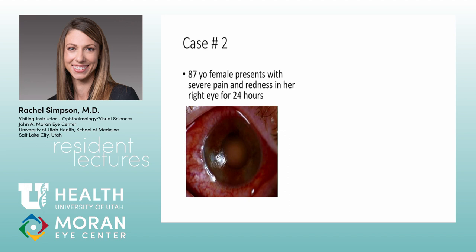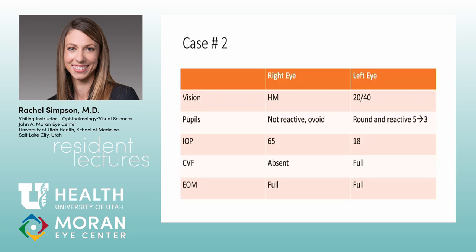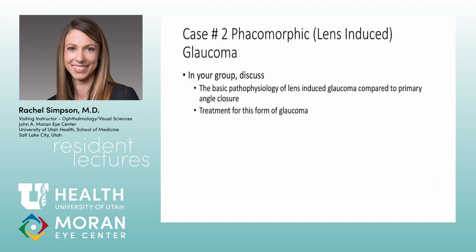Case number two: everything is the same except she has a white lens in the middle of her eye. Her optometrist told her she had a cataract a while ago but cataract surgery scared her. The pressure is high, she can't see anything out of that eye, and she has a white intumescent lens. So: what is the difference between primary pupillary block angle closure and phacomorphic angle closure?